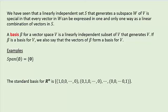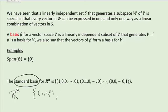Some examples of a basis. Since the span of the empty set is the zero vector space, we say the basis for the zero subspace is the empty set. The standard basis for R^n you have seen many times, and it is the easiest one to use. For example, the standard basis for R^3 would be (1,0,0), (0,1,0), and (0,0,1).